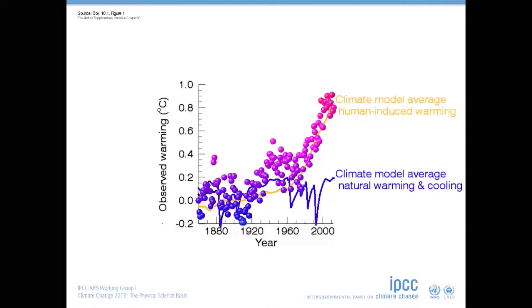The black line shows the model's response to the combination of human and natural influences. It tracks the observations closely over most of the century, but appears to be too warm in recent years. You can see it is sticking out above the dots marking observed temperatures. What does this mean for understanding of the causes of recent warming?